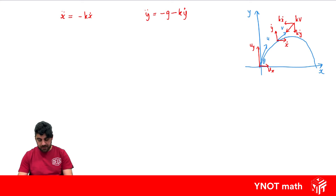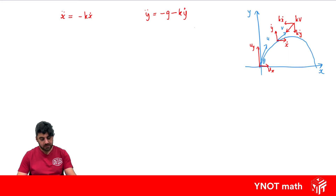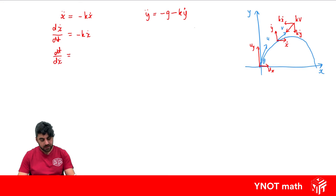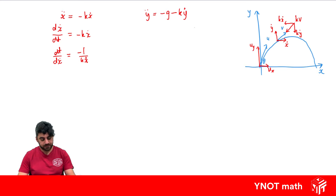Now we want to integrate both equations using our initial conditions. Let's focus on x first. We need to rewrite x-double-dot as the derivative of x-dot with respect to time, equals minus k·x-dot. We can't integrate just yet. Moving dt to the other side, we'd want dx-dot in the denominator, so we take the reciprocal of both sides: dt over dx-dot equals minus one on k·x-dot. Now we can take the integral of both sides.